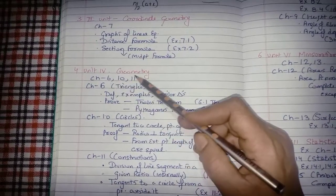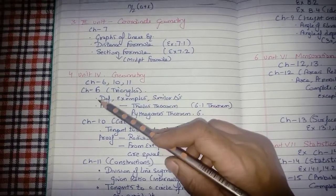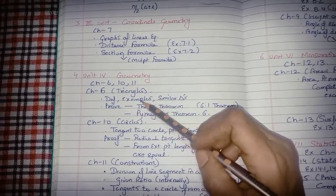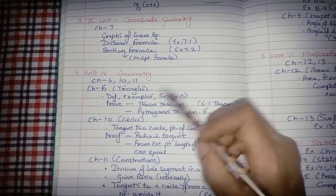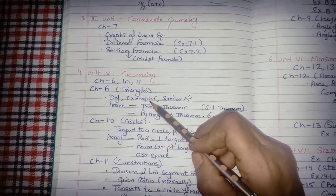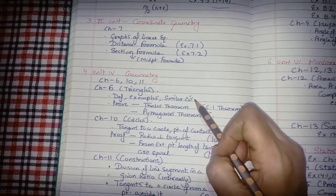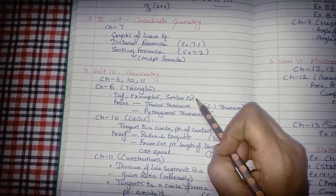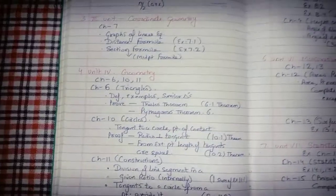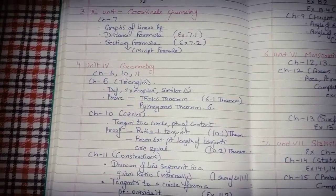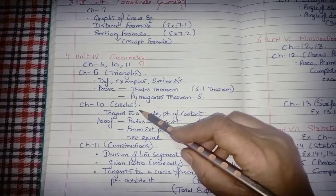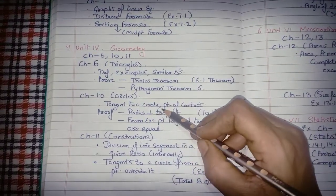Unit 4 is Geometry, covering chapters 6, 10, and 11. In Chapter 6 on Triangles: prepare definitions, examples, properties of similar triangles. For proofs, only two theorems are required - the Basic Proportionality Theorem (BPT) proof and the Pythagoras Theorem proof.